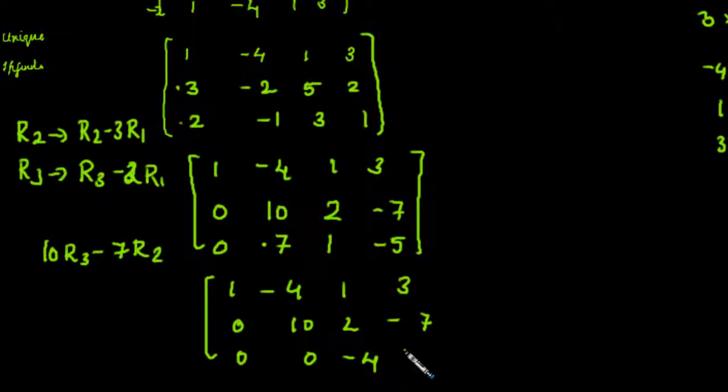The element here will be 10 minus 14, that would be -4, and the element here will be -50 plus 49, that will be -1. Clearly the rank of the augmented matrix is 3, that is the number of nonzero rows in the row echelon form.